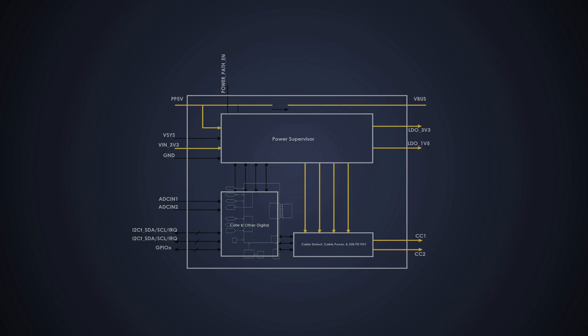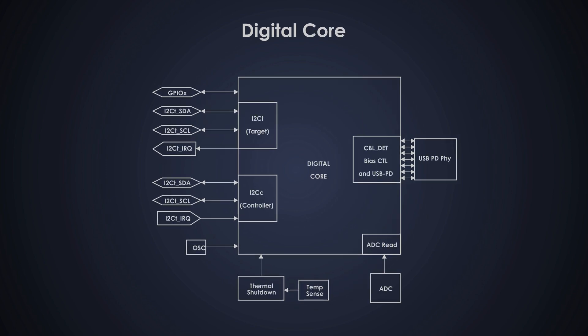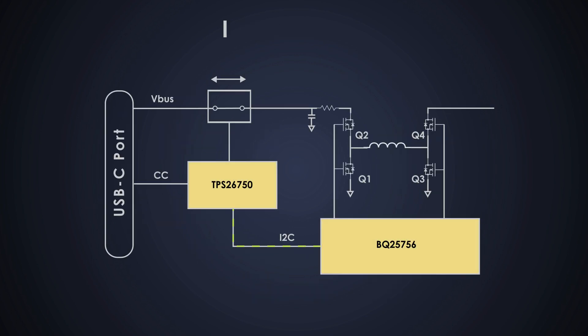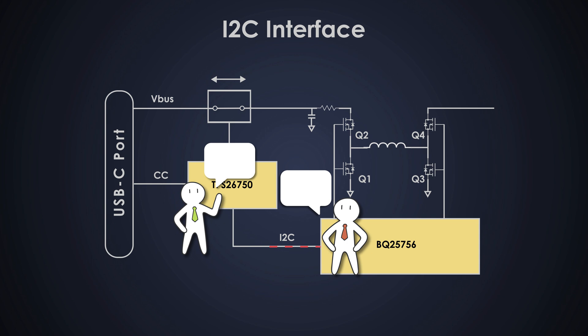Next is the digital core — the brain of the whole operation. It stores all the information needed to handle USB power rules, communicates with the laptop, and tells all other components what to do. Finally, the I2C interface acts as the messenger that talks to other gadgets like the battery charger, keeping everything coordinated so all parts of your device stay powered safely.